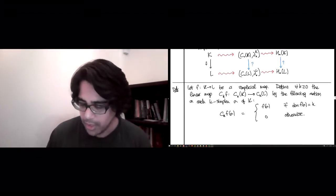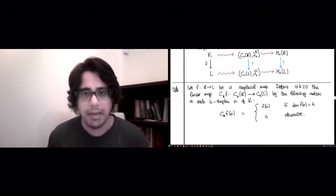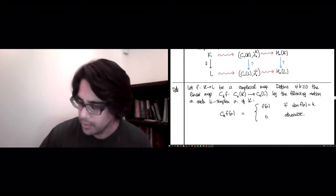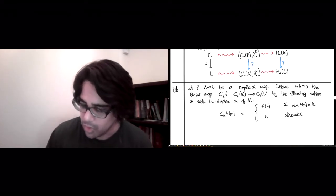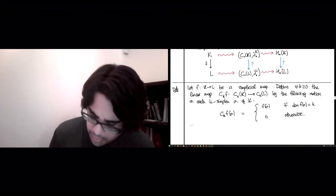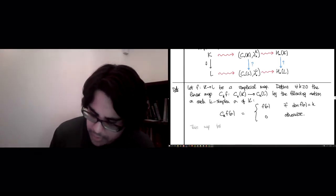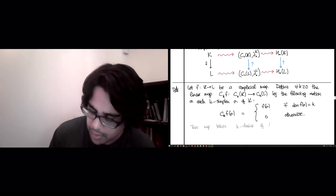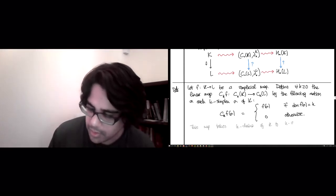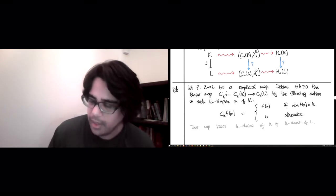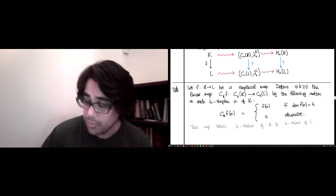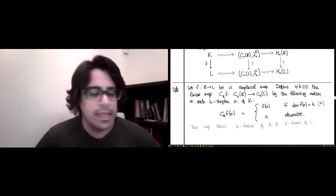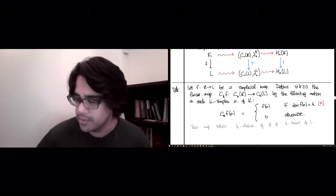And so this is called c_k(f). This is a map that allows us to go from k chains of K to k chains of L. And I'm going to remark again that this highlighted condition, dimension f(σ) equals k, is precisely the same as requiring f to be injective on all the vertices of σ.